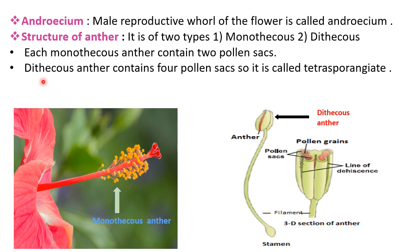In a dithecous anther, it contains four pollen sacs, so it is called tetrasporangiate. In the figure we see a dithecous anther, which shows two anther lobes. When we take a transverse section of the anther, inside we see a total of four pollen sacs arranged inside — one, two, three, and four. As four pollen sacs are present, the anther is called a tetrasporangiate anther.